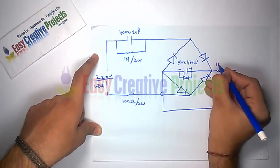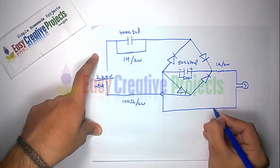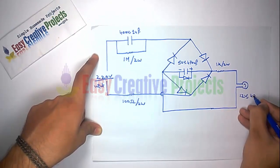Now connect 1K resistor. And finally connect 40 watt LED.